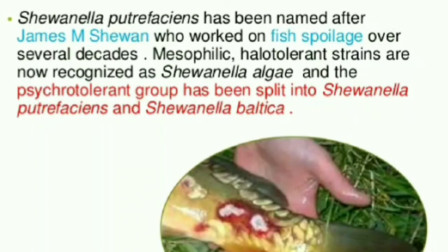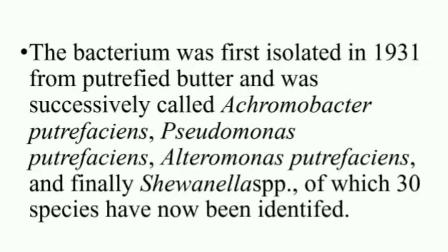The word 'putrefaction' came from the word 'putrid,' meaning decaying or rotting, and the word 'Shewanella' came from the scientist who worked in fish spoilage — James M. Shewan. The bacterium was first isolated in the year 1931 from a putrefaction sample, and was initially called Achromobacter putrefaciens.